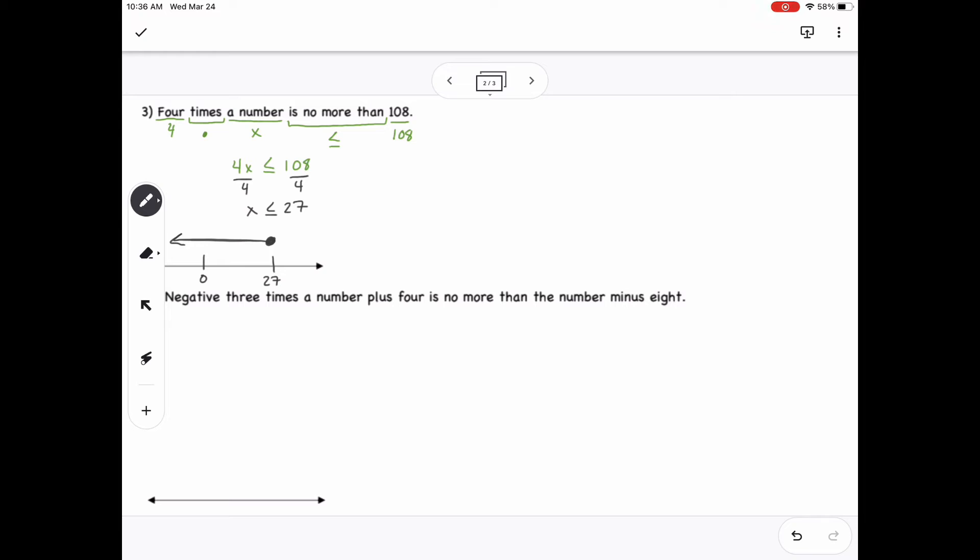For number 4, we have negative 3 times a number plus 4 is no more than the number minus 8. That's a lot there, but break it down piece by piece. So negative 3 is negative 3. Then we have times, which is multiplication, and then a number, which is x. Here it says plus, so we'll have a plus sign there, and then plus 4. Is no more than again, so we also have another less than or equal to sign here.